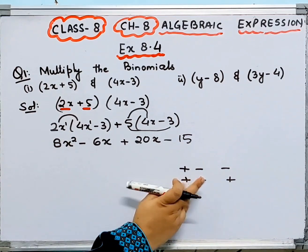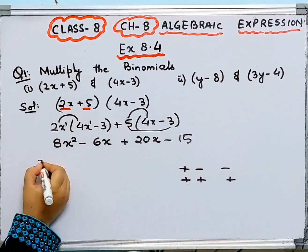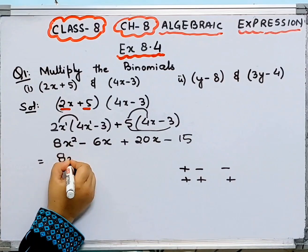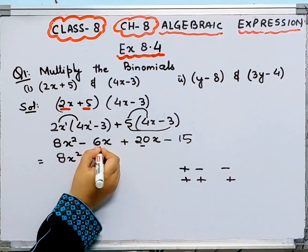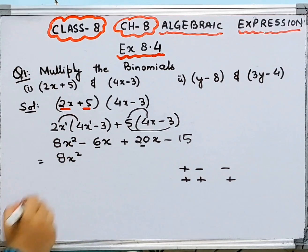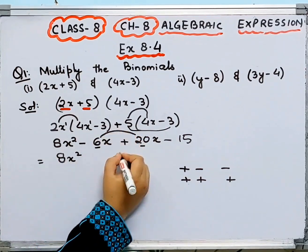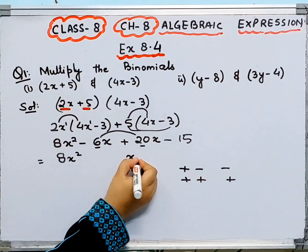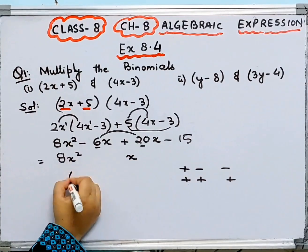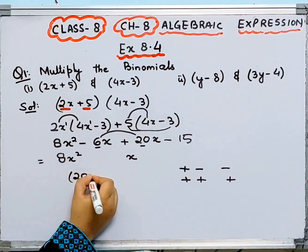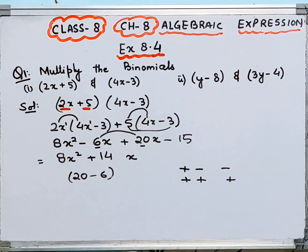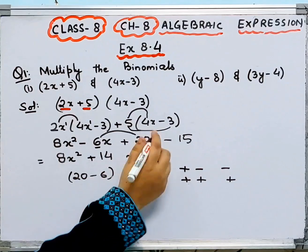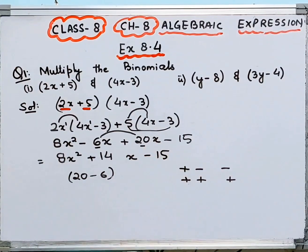Now further simplify. This gives 8x squared. We have 20x minus 6x — combining like terms with the same variable x: 20 minus 6 is 14, so plus 14x. And here we have minus 15. That is your answer.